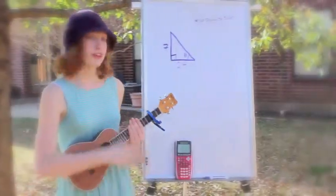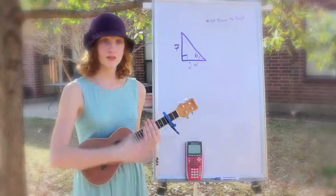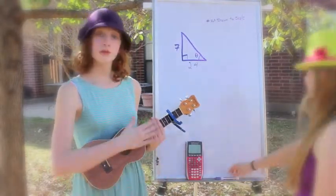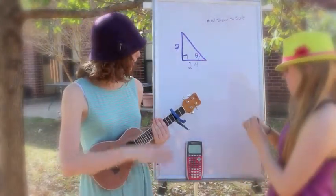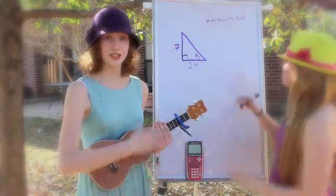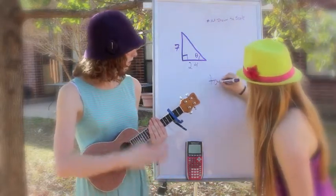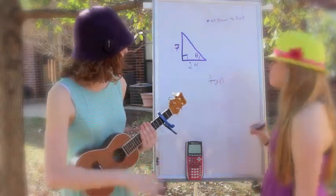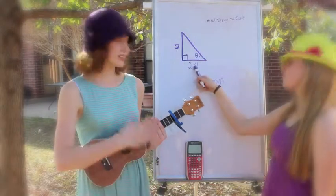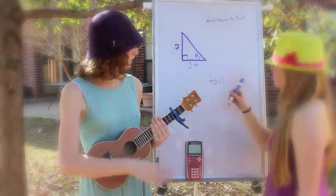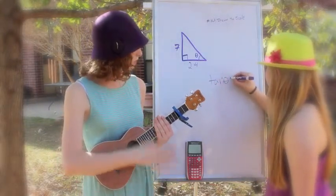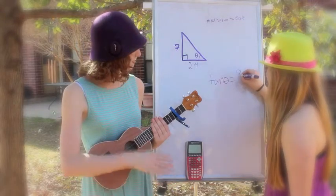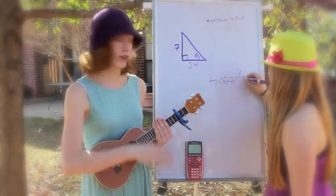Let's try an example now. So here's a right triangle. We're going to be solving for the angle, since that's the missing variable. We're going to use tangent, because we've got the opposite and the adjacent side. So tangent of the angle equals opposite over the adjacent.